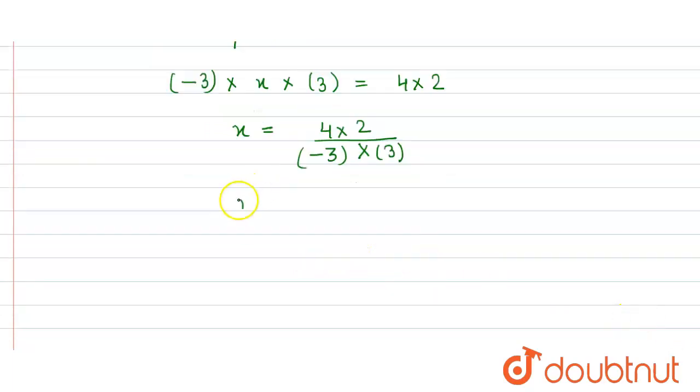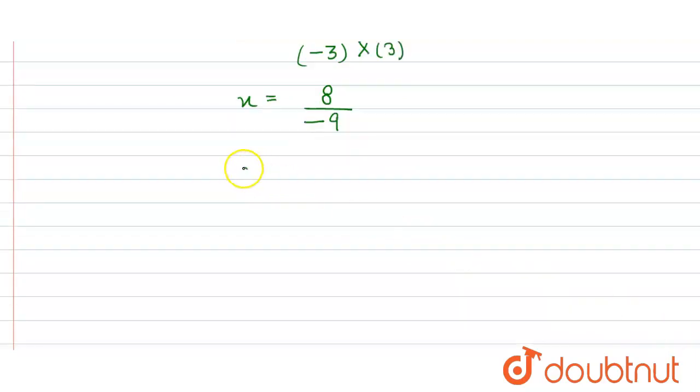So we get x equals 4 into 2 equals 8 divided by minus 3 into 3 equals minus 9. This can also be written as minus 8 divided by 9, and that's our answer.